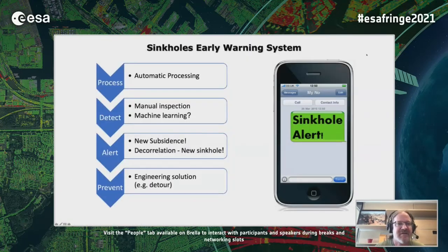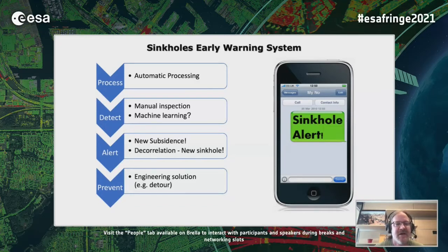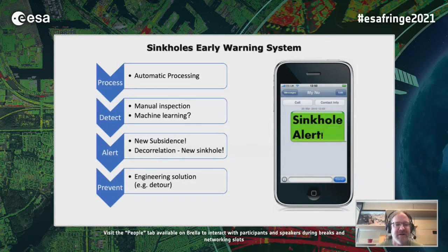To summarize: the automatic processing has been ongoing for almost a decade. We detect sinkholes and subsidence through manual inspection, and wish to integrate machine learning and more sophisticated automatic processes for the detection phase. New subsidence or sinkhole alerts based on decorrelation are sent to stakeholders, who then deliver engineering solutions — such as the detour built at Ein Gedi.